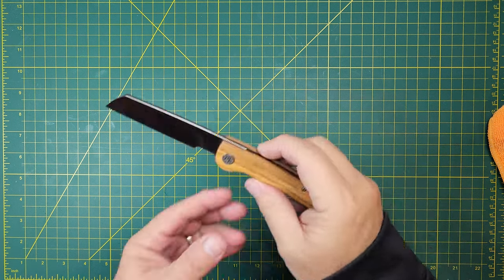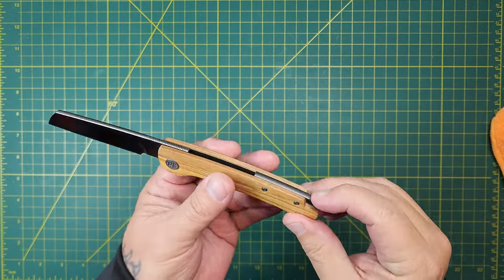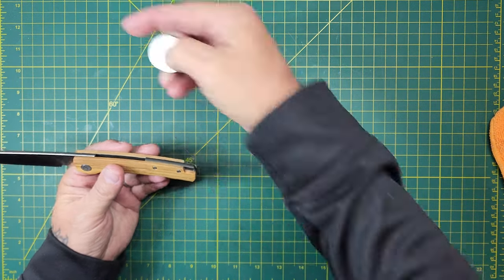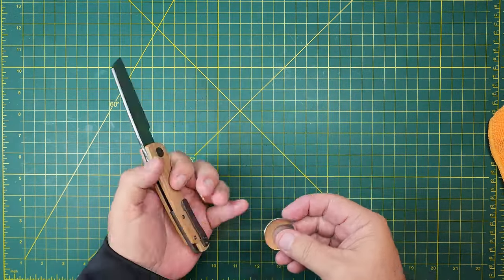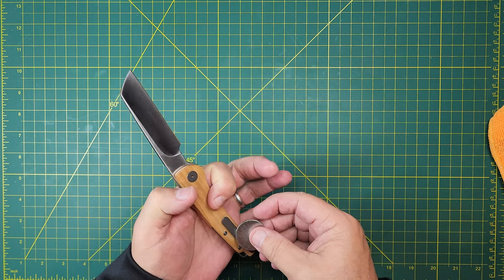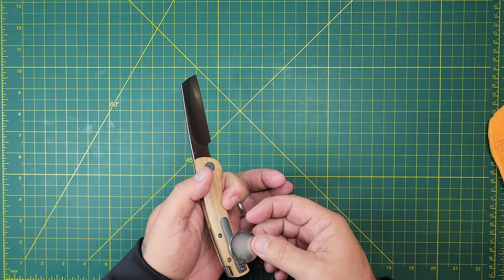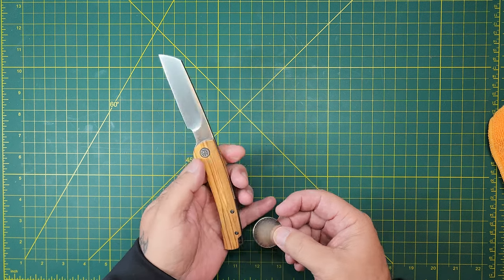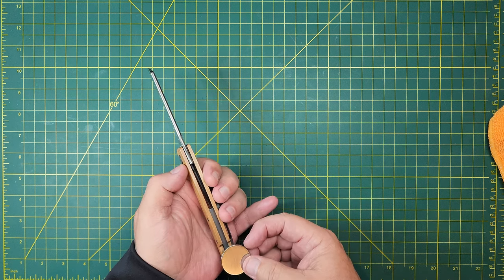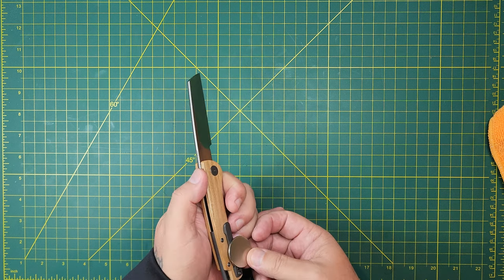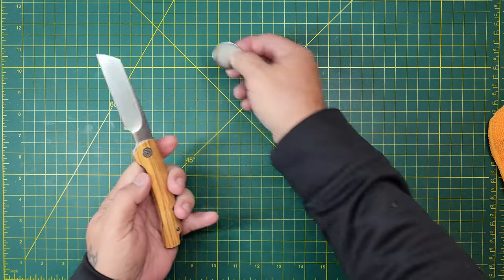It's got olive wood scales, and I believe that's titanium, that backspacer and the pocket clip. Let's check. That is not titanium. That's metal, some kind of weird metal. Maybe it's just picking up the screws. I'll take it off and check it again.